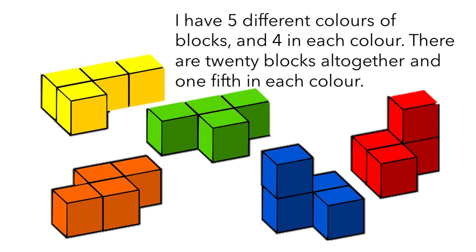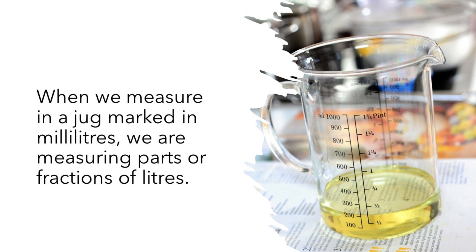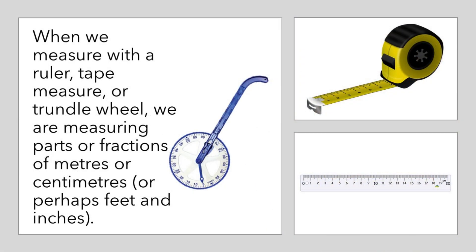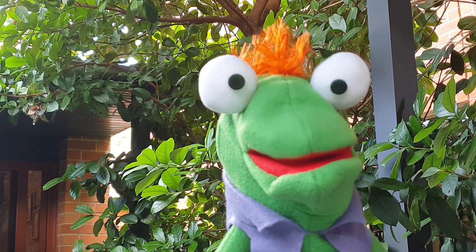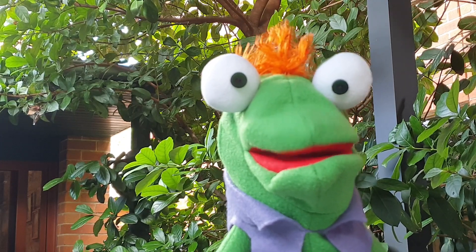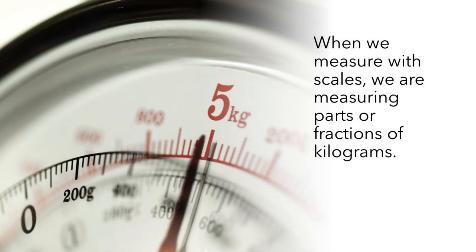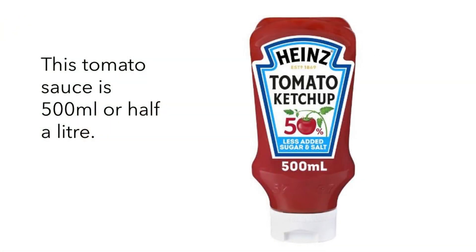When we measure in a jug marked in milliliters, we are measuring parts or fractions of liters. When we measure with a ruler, tape measure, or trundle wheel, we are measuring parts or fractions of meters or centimeters. When we measure with scales, we are measuring parts or fractions of kilograms.